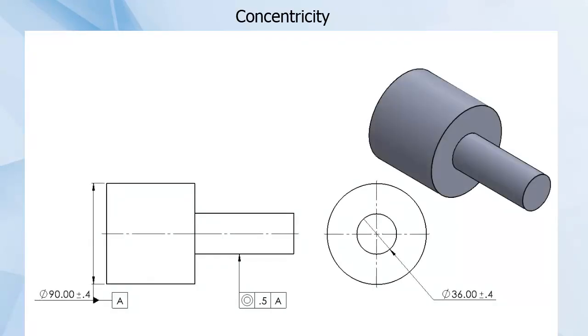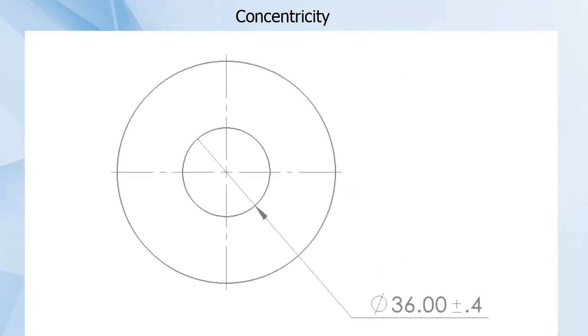What does this mean? It means that if we take a cross-section of this pin and control it for concentricity, we would then need to measure all diametrically opposed points and find their median.